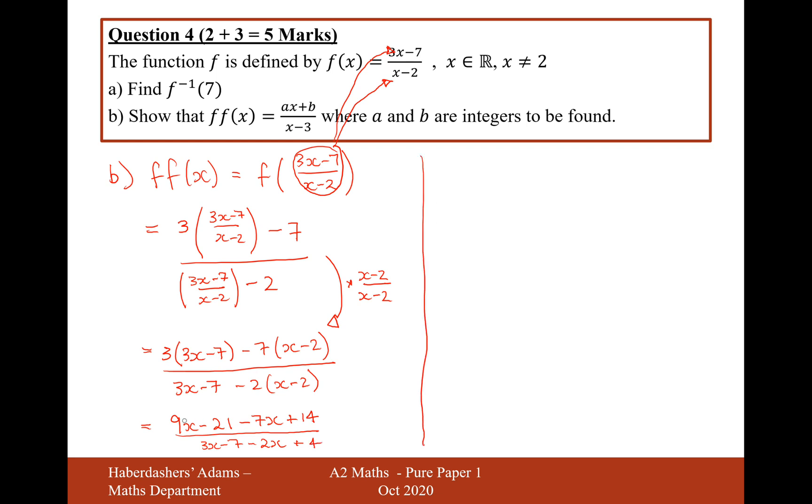So let's now simplify that. 9x minus 7x, that's going to be equal to 2x. Minus 21 plus 14 will be minus 7 over 3x minus 2x is x and minus 7 plus 4 will be minus 3. So therefore, a is equal to 2 and b is equal to minus 7.